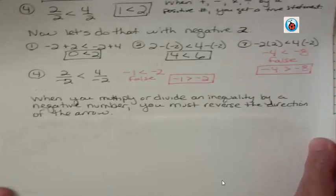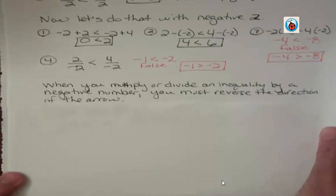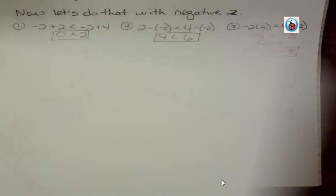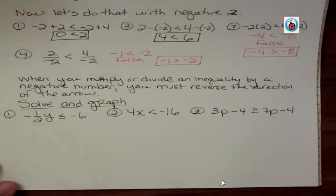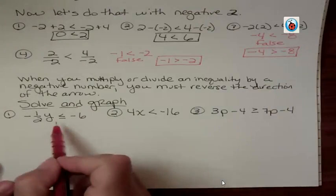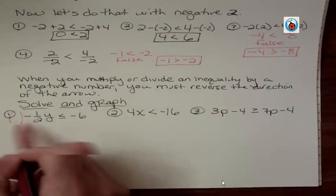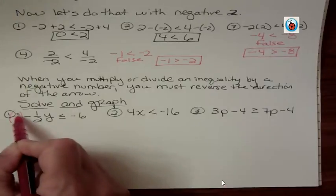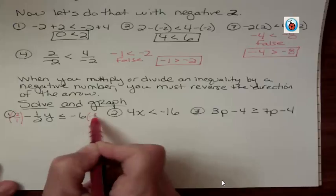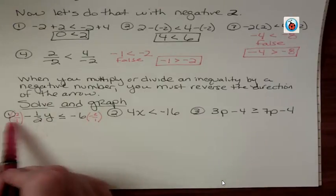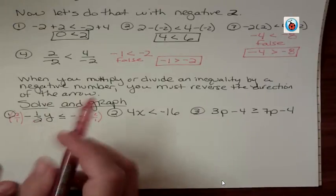So I already showed you how to solve and graph inequalities, but I want you to try one where you have to worry about flipping the direction of the arrow. You see this right here? In order to get rid of the coefficient, I would have to multiply that by a negative 2 over 1. Okay, if I multiply, these two negatives make a positive, and these cancel out, and so I get y.